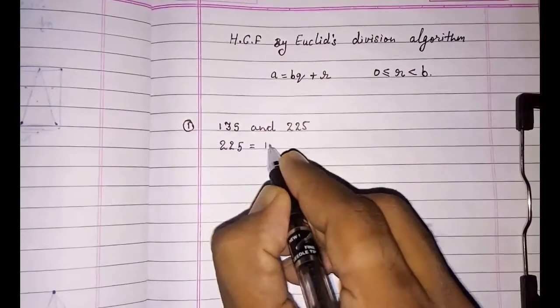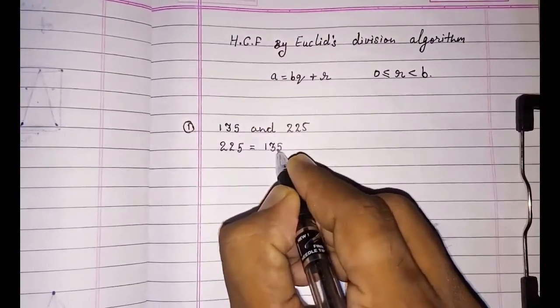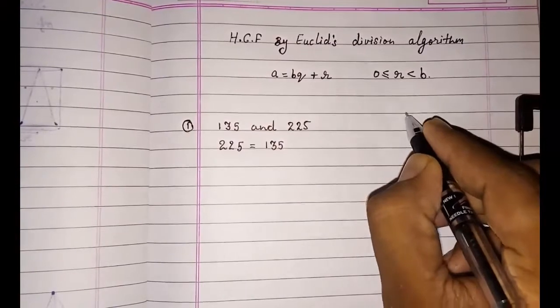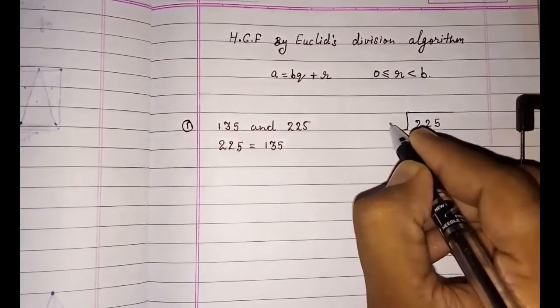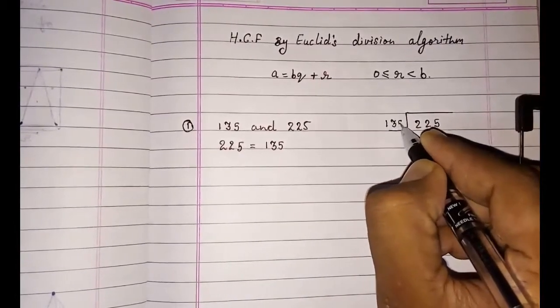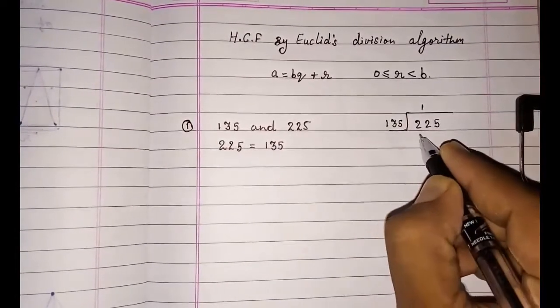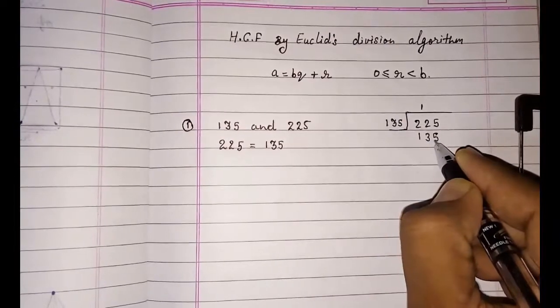I am going to divide it here. So we come to know 225 divided by 135: one times 135. Look here, I am dividing.